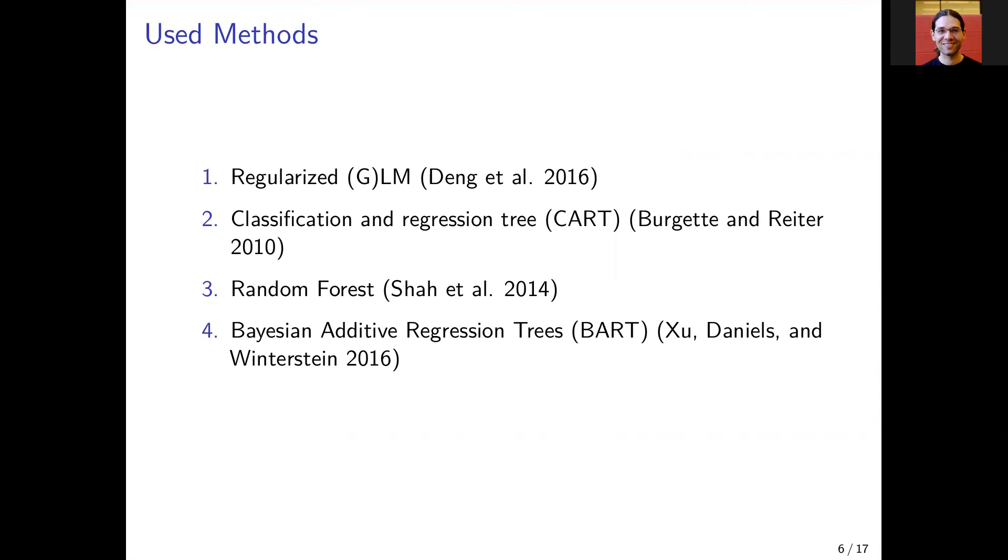The first one are regularized generalized linear models. The second one are classification and regression trees, short CART, the random forest, and last, the Bayesian additive regression trees, short BART.